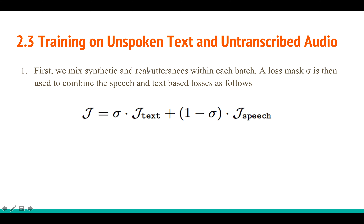How do you combine the text loss and the speech loss? It's very simple: you mix synthetic data and real utterances within a batch. For example, with a batch size of 10, you take five real audio files and five text files, get the mel spectrogram from both, mix them, compute the loss, and get the final loss as a linearly scaled sum of the two losses.